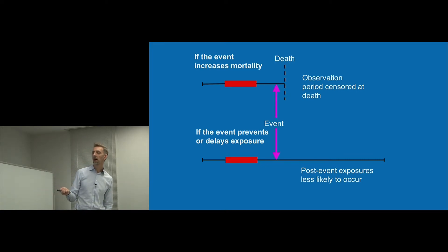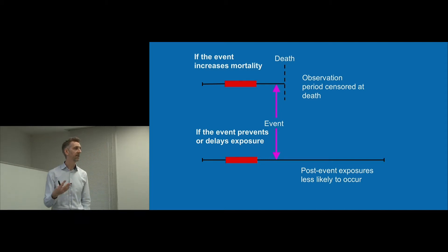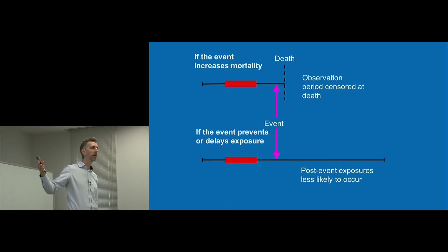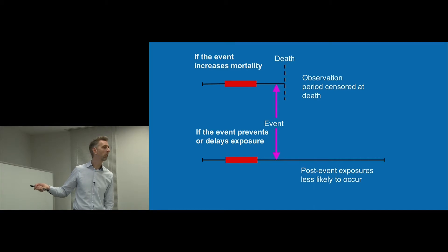In the second case, having the outcome means you're then not likely to receive the exposure in the future. This could be something like the GI bleed that was discussed with antidepressants — once doctors knew this was a problem, if somebody had already had a GI bleed, they might avoid antidepressants in the future. It would mean we then had a long period of observation with no exposure and no outcome, giving an artificially low rate of the outcome during baseline time, which would be a problem for the design.